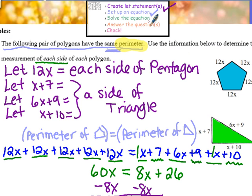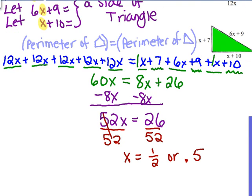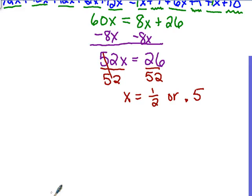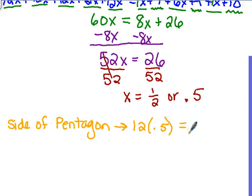We solved the equation, but now we must answer the question. So go back and reread: Use the information below to determine the measurement of each side of each polygon. So now that we know what x is, we can use that value and plug it in here to find each side of the pentagon. We can plug in x here, here, and here, and evaluate these to find all three sides of our triangle. You should still have room down below. So underneath, we are going to show how we find the length of each side of each polygon.